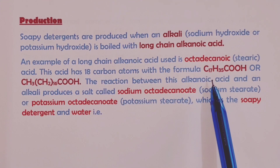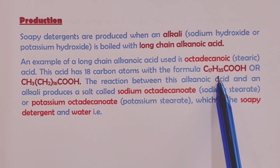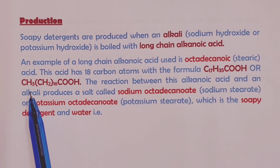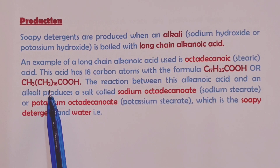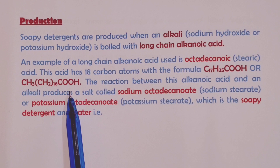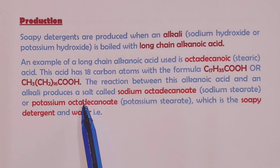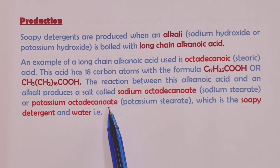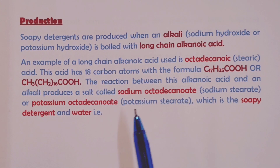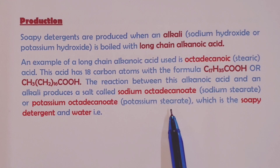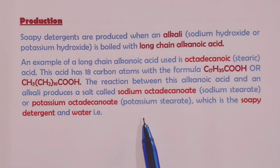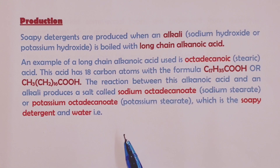Stearic acid has 18 carbons, and the formula can be written as C17H35COOH, or we can simplify this as CH3(CH2)16COOH. The reaction between this octadecanoic acid and either of our two alkalis would produce a salt called sodium octadecanoate or sodium stearate when you use sodium hydroxide, or potassium octadecanoate or potassium stearate when you use potassium hydroxide.